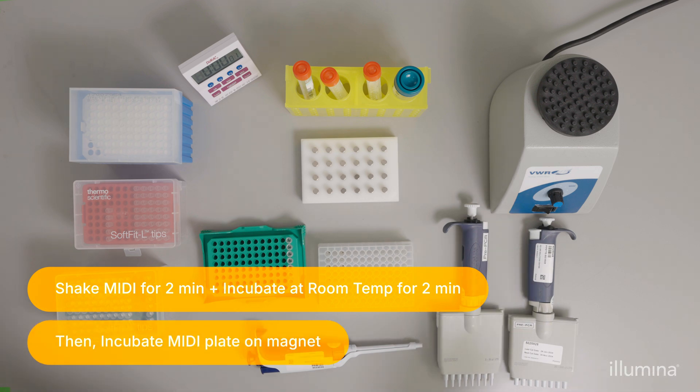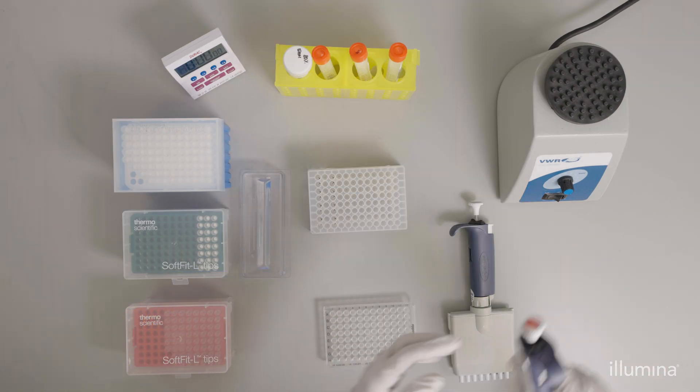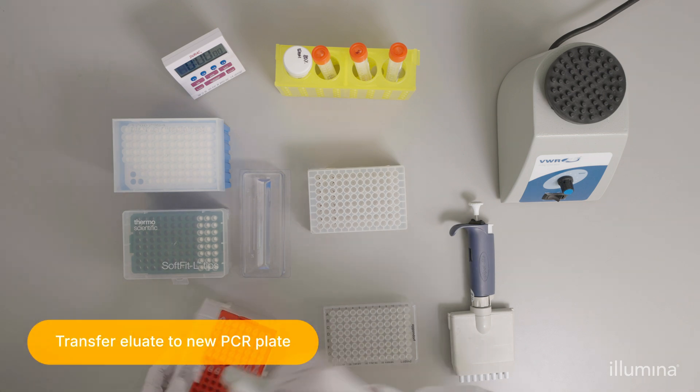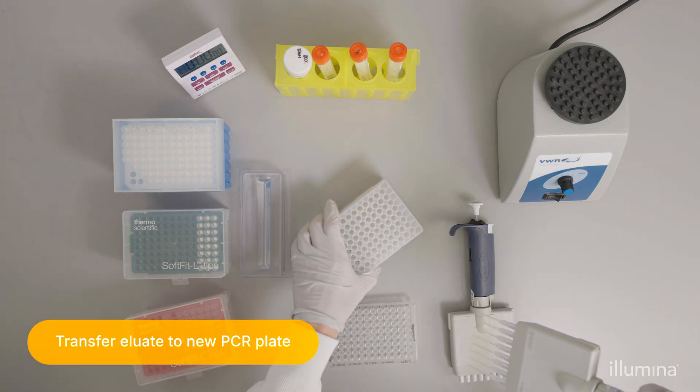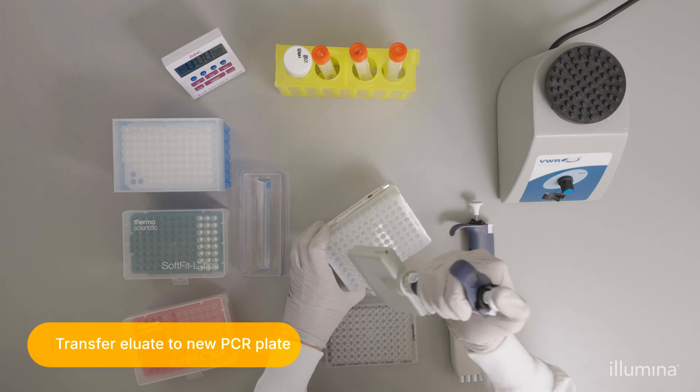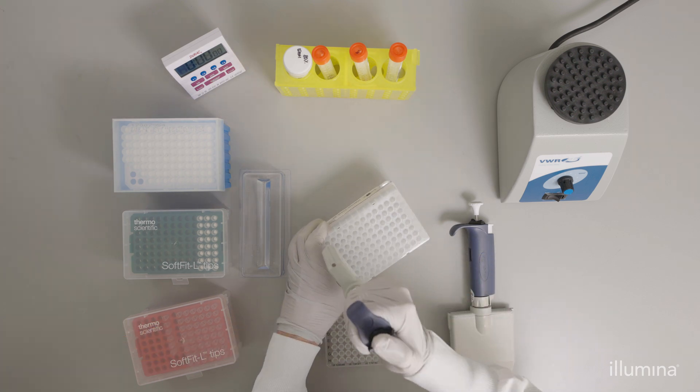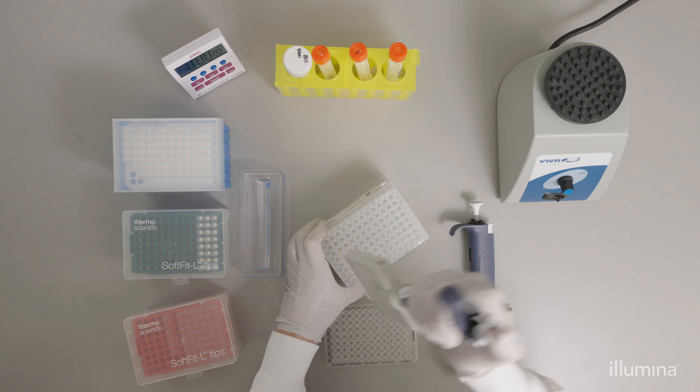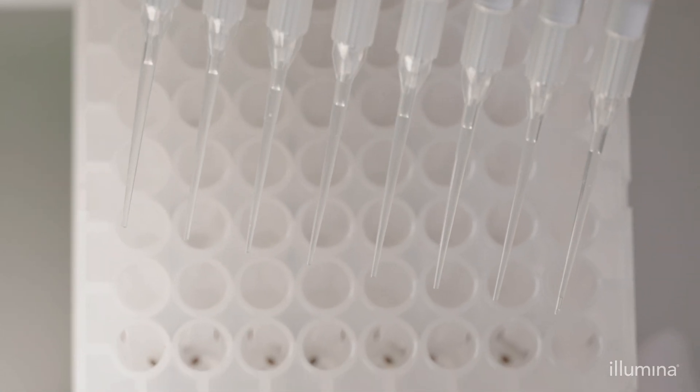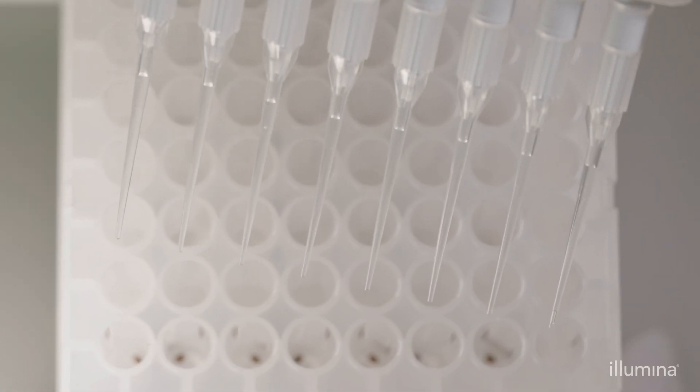Incubate on the magnet for the time according to the protocol. After incubation is complete, transfer the eluate to the corresponding wells of a new 96-well PCR plate using a 20 microliter multi-channel pipette. Check the tips for equal volume during transfer.